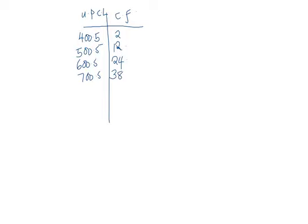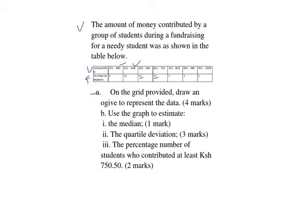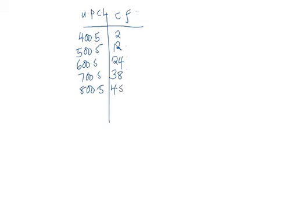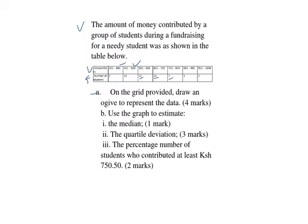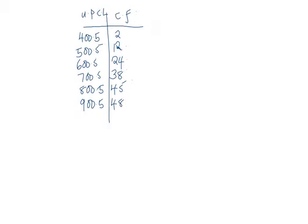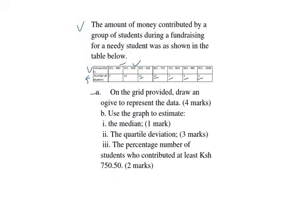The next one is 800.5 and the cumulative frequency is 38 plus 7, which is 45. The next one is 900.5 and the cumulative frequency is 45 plus 3, which is 48. Lastly, we have 1000.5 and the cumulative frequency is 48 plus 2, which is 50.